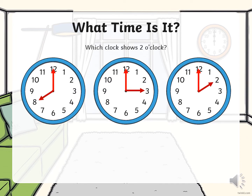What time is it? Which clock shows 2 o'clock? Let's have a look at the first one. We can see that the long arm is in the right place to say o'clock, but the short arm is pointing to the 8. The short arm is the hour hand, which shows us what hour it is. We are looking for 2 o'clock, and this one is pointing to the 8.